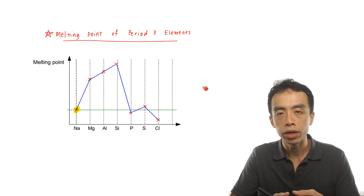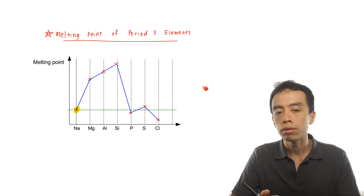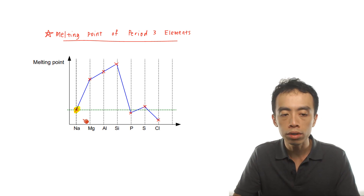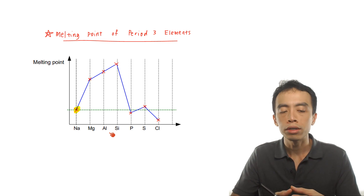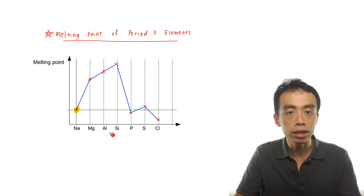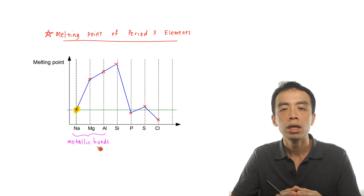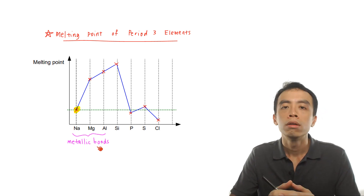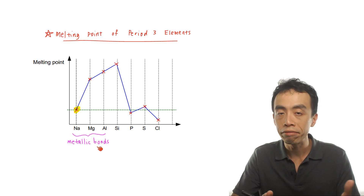Knowing the melting point trend without being able to explain it is not particularly interesting, so let us go through that. The first three elements are our metals: sodium, magnesium, and aluminum. The attraction holding these metal atoms together is metallic bonds — the attraction between positively charged metal cations and the sea of delocalized electrons. The factor affecting the strength of the metallic bond will be the valency.